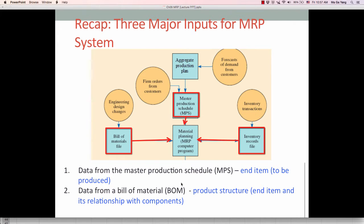Second major input is the data from the bill of material, BOM. This is about product structure, product structure tree, which describes its end item and its relationship with the components. So if there is any engineering design changes that go into BOM, then BOM is very important information to MRP system. Third major input is the data from inventory record file. So inventory on hand or inventory related information should be included in MRP system.